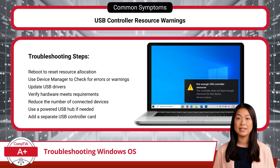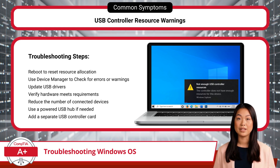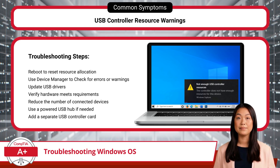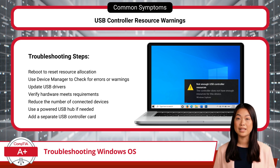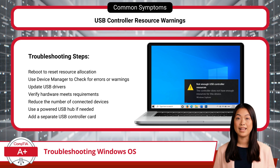USB controller resource warnings occur when there are conflicts or limitations in the system's ability to allocate resources to connected USB devices. These warnings may arise from too many USB devices competing for limited resources, outdated drivers, hardware limitations, or even using an unpowered USB hub, which cannot provide enough power to all connected devices. To troubleshoot USB controller resource warnings, start by rebooting the system to clear temporary conflicts and reset resource allocation. After rebooting, open Device Manager and look for errors or warning symbols related to USB controllers or devices. If issues are found, update the USB drivers to ensure they're compatible and functioning correctly.